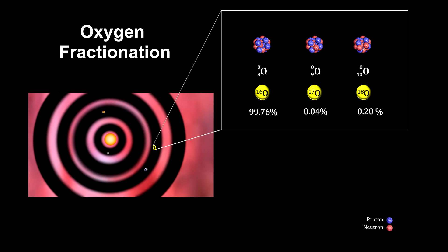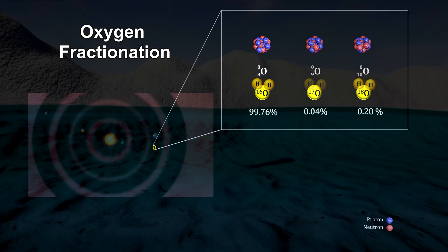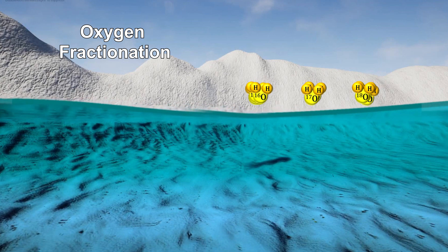Here on Earth, we find that 99.76% of the oxygen is oxygen-16. Only 0.04% is oxygen-17 and 0.2% is oxygen-18. But physical processes can change these ratios for any particular sample.